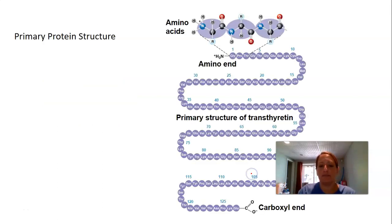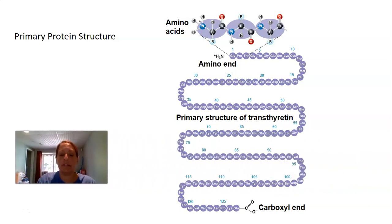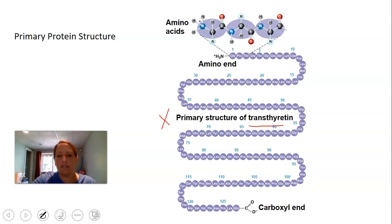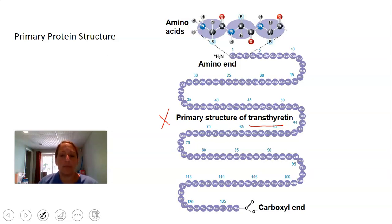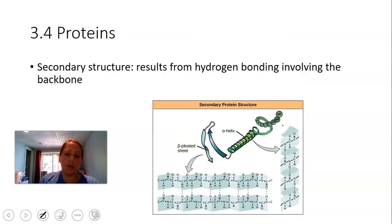The primary structure of a protein is literally just the chain of amino acids joined together — the list of monomeric subunits. In this figure, the primary structure of the enzyme transthyretin consists of 125 amino acids: glycine, proline, threonine, glycine, threonine, glycine, glutamine, serine, lysine, cystidine, proline, and so on. The sequence of these amino acids is coded for in your DNA.